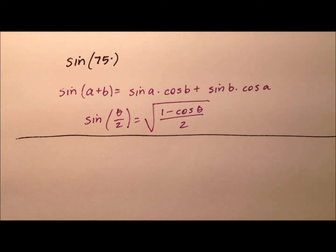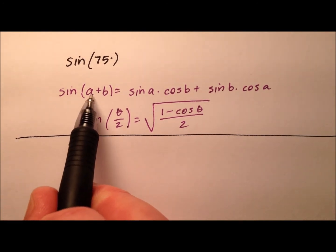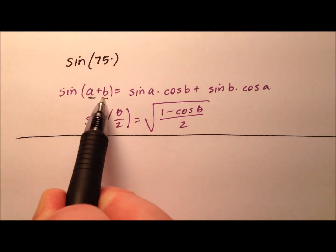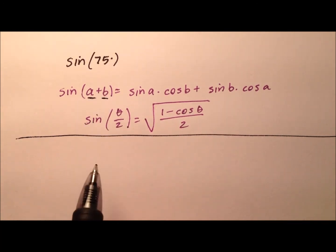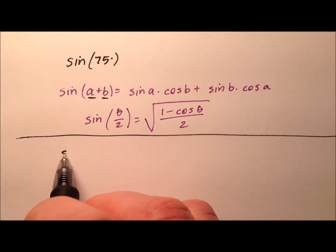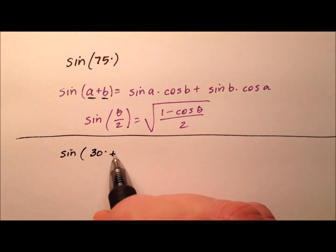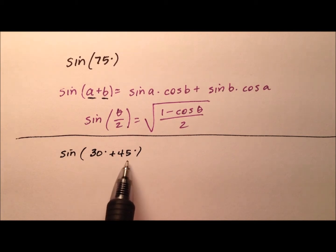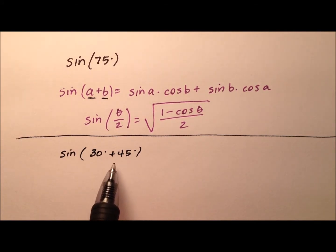We'll put it in a calculator and verify that what we've done is correct. For the sine of a plus b, we need two angles that we know the values of for both sine and cosine that add up to 75. Well, 30 degrees plus 45 degrees — both of those are nice angles. We know the sine and cosine of both 30 and 45 degrees, and they also add up to 75 degrees.